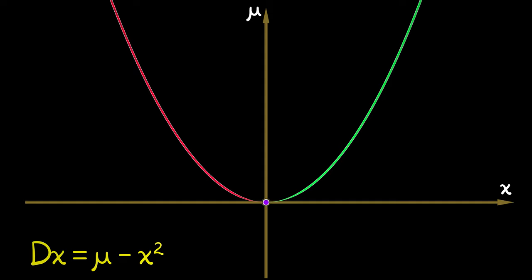You have one branch of stable equilibria, one branch of unstable equilibria that emerge from the bifurcation point in a quadratic fashion.